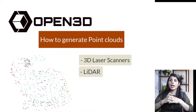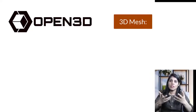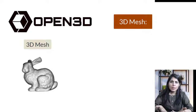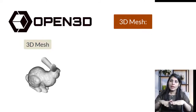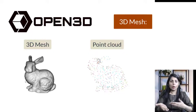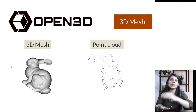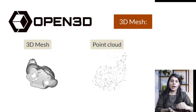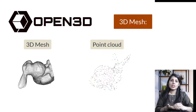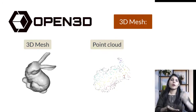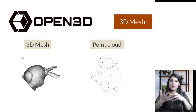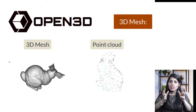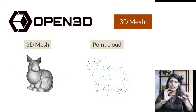Now let's talk about mesh. A 3D mesh is the structural base of a 3D model. We can generate a 3D mesh from point clouds — so the first step is point clouds, and from those point clouds you can generate a 3D mesh. A mesh is basically a collection of vertices, edges, and faces that defines the model's height, width, and depth.